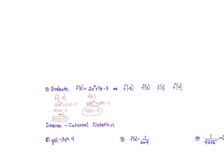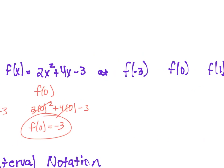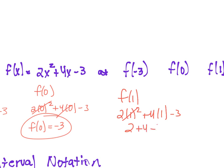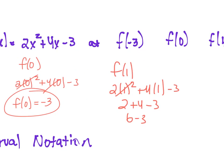Now f of 1: 2 times 1 squared plus 4 times 1 minus 3. What's 1 squared? 1. 1 times 2 is 2. What's 4 times 1? 4. Working left to right: 2 plus 4 is 6, and 6 minus 3 is 3.